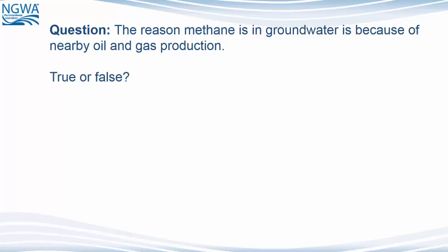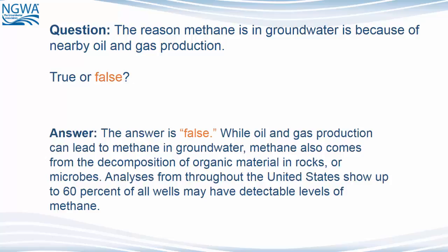The reason methane is in groundwater is because of nearby oil and gas production. True or false? The answer is false. While oil and gas production can lead to methane in groundwater, methane also comes from decomposition of organic material in rocks or microbes. Analyses from throughout the United States show up to 60% of all wells may have detectable levels of methane.